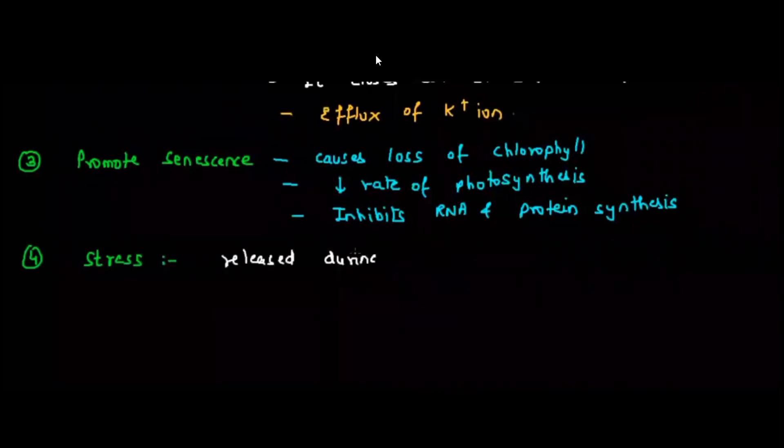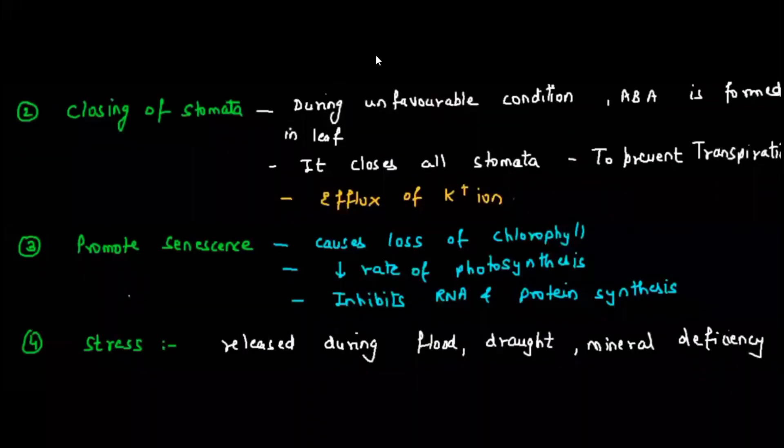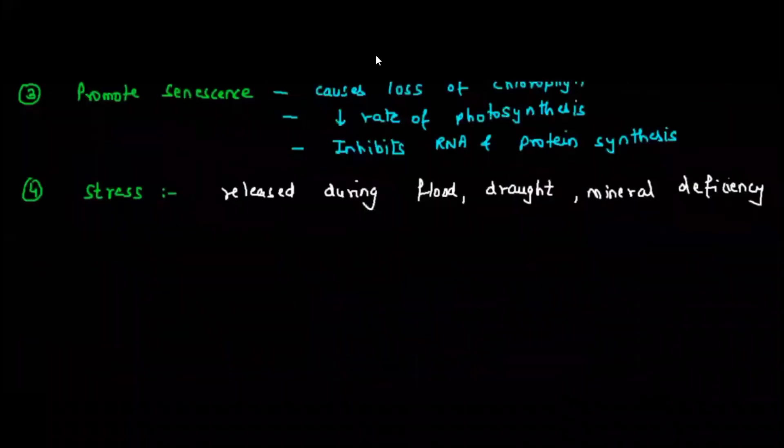It is released at the time of stress, so during flood, drought, or mineral deficiency in the soil, abscisic acid will be released so that it can help the plant to survive under unfavorable condition.